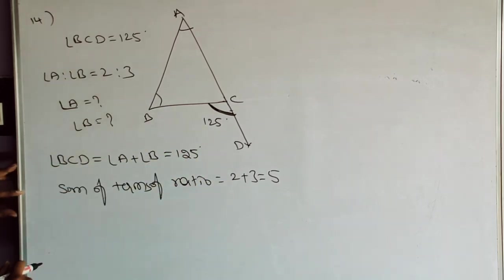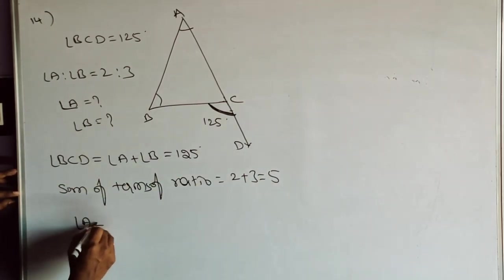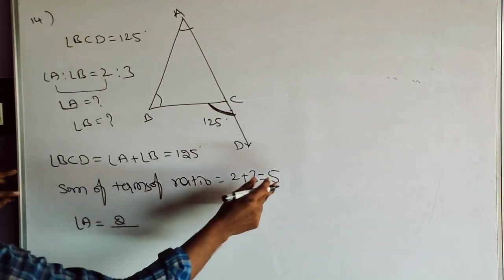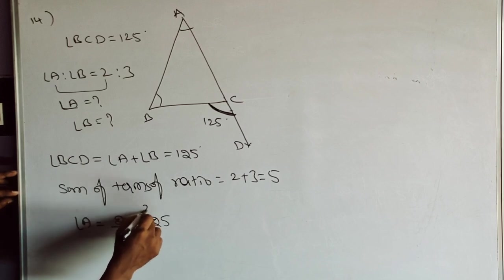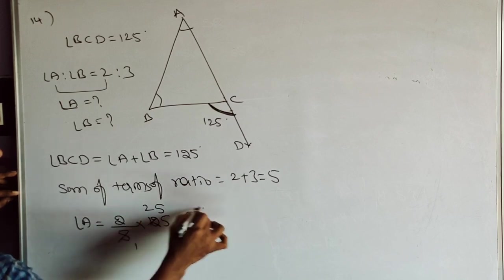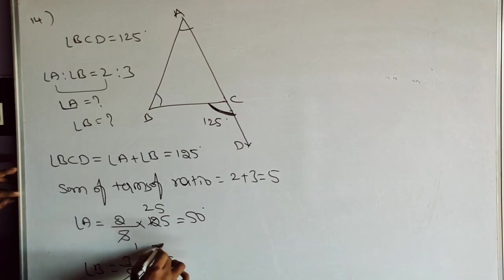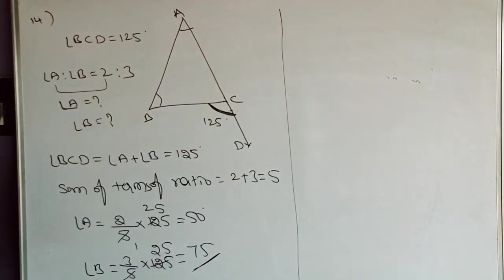Angle A plus angle B equals 125, with ratio 2:3 and sum of ratio terms = 5. So angle A equals (2/5) × 125 = 50 degrees. Angle B equals (3/5) × 125 = 75 degrees.